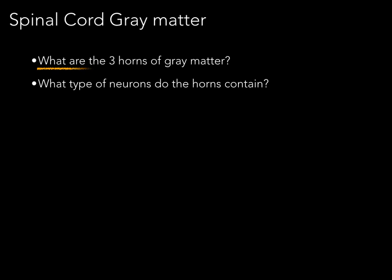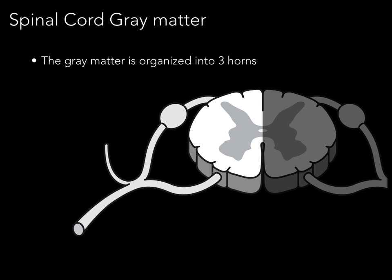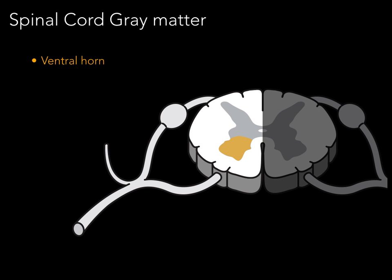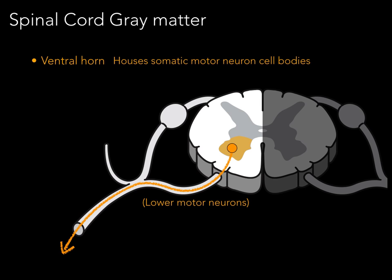What are the three horns of gray matter and what type of neurons do the horns contain? The gray matter is organized into three different horns: a ventral horn, also known as anterior horn; a lateral horn, sometimes known as an intermediate horn; and a posterior or dorsal horn. Starting with the ventral horn: it houses somatic motor neuron cell bodies. There is one somatic motor neuron cell body, and the axon exits out and innervates skeletal muscle. This cell body in the ventral horn — with its axon going out — is sometimes called a lower motor neuron, because it's innervated by an axon from a neuron that starts in the cerebrum and courses down to the ventral horn, which is called an upper motor neuron. These cell bodies in the ventral horn are also called ventral horn cells.